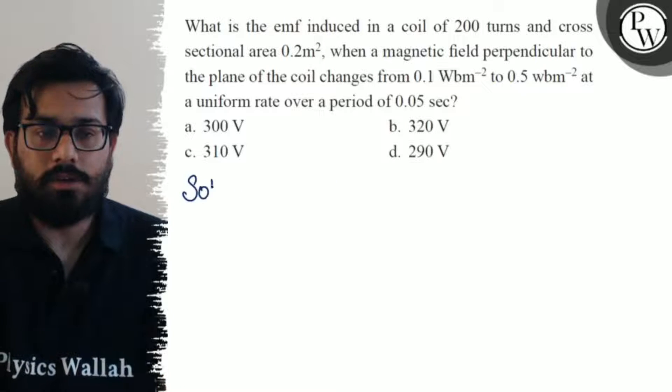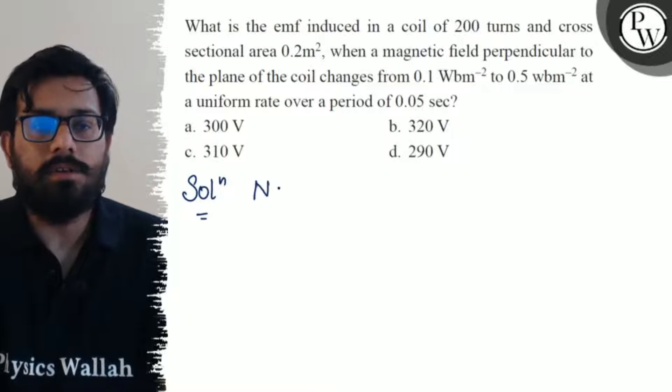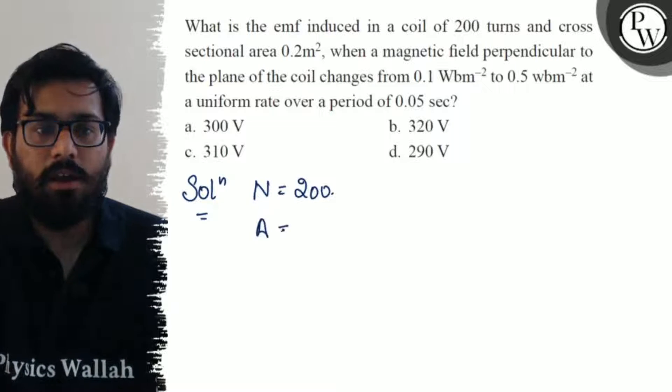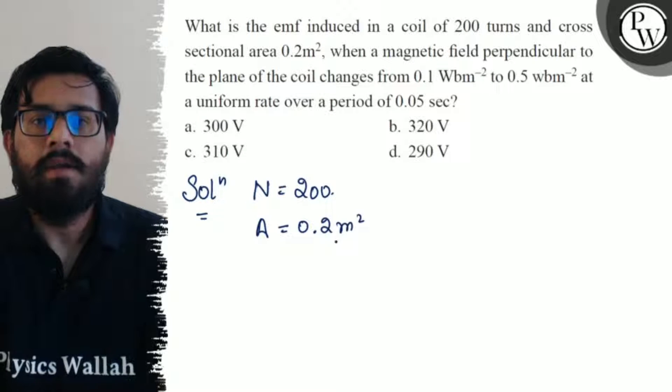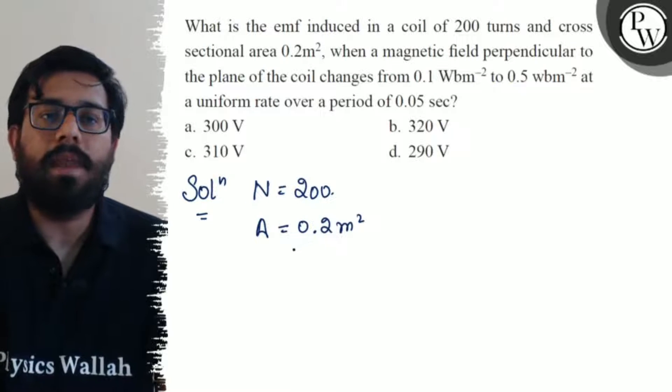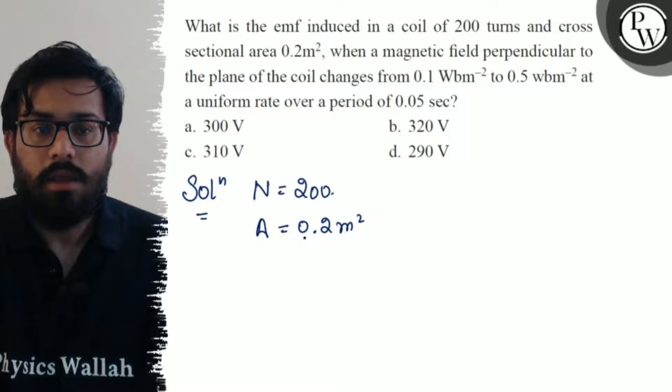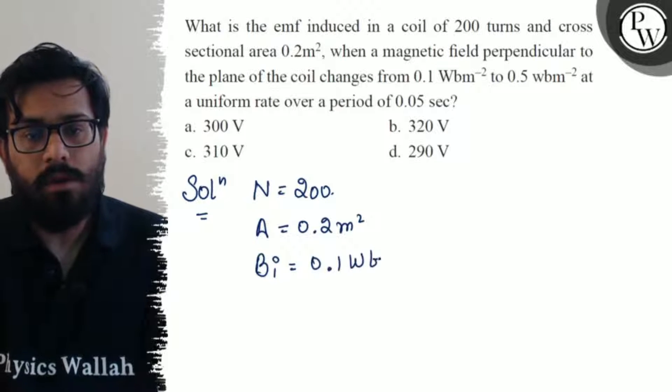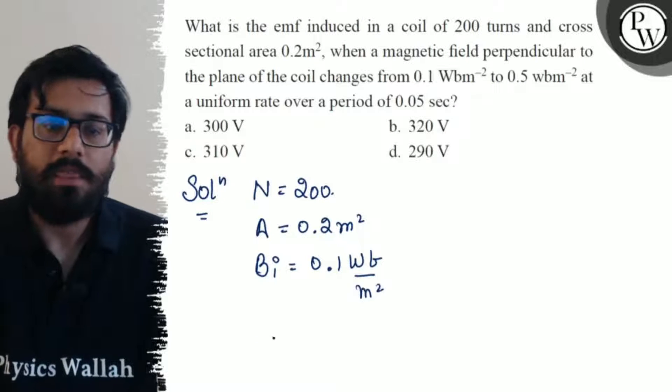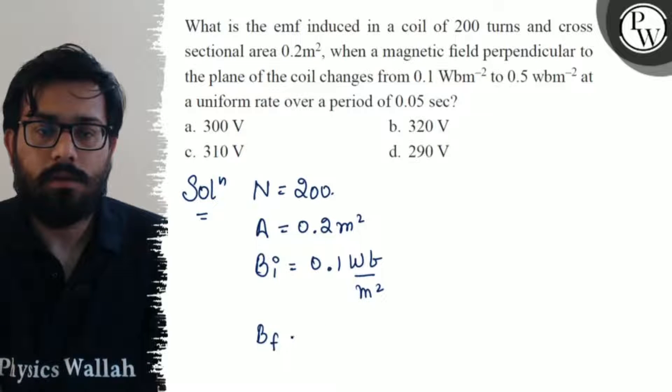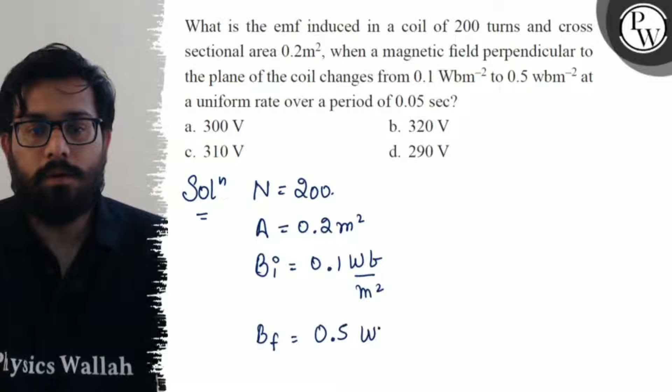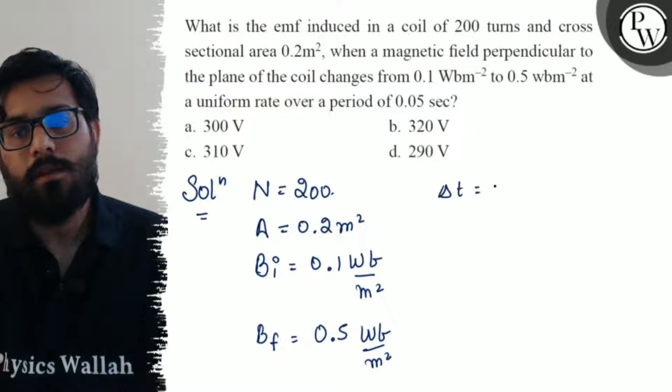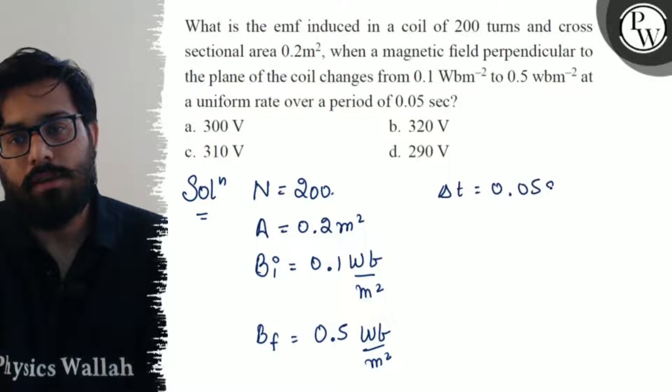So let's see the solution of this question. First of all, write the given data as number of turns as 200, having a cross-sectional area of 0.2 meter square when a magnetic field perpendicular to the plane of the coil changes from the initial magnetic field as 0.1 Weber per meter square, final one is 0.5 Weber per meter square, and for the time interval of 0.05 seconds.